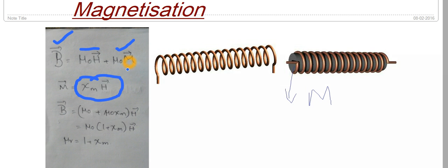And if I substitute this value here, my final equation will be μ₀ into 1 plus χM into H. And now I am introducing another important parameter called relative permeability νR, which is 1 plus χM.